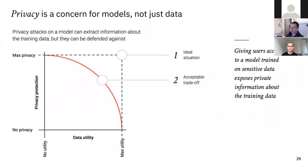We can think of the trade-off in terms of privacy and utility. On the y-axis we have privacy from no privacy to maximum privacy, and on the x-axis we have data utility from none to maximum. There is a trade-off between how private we want to be and how much utility we want to retain. We'd love maximum privacy and maximum utility, but typically there'll be some trade-off, and we'll be able to quantify and find an acceptable trade-off for our specific use case.